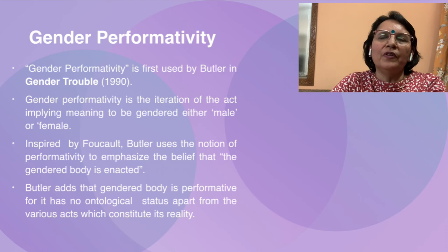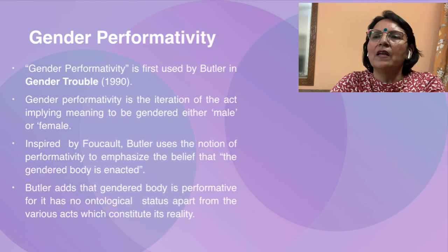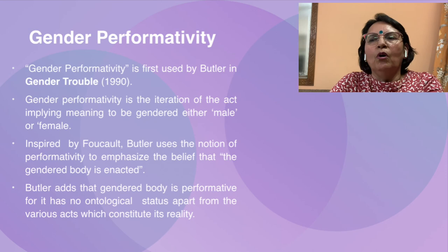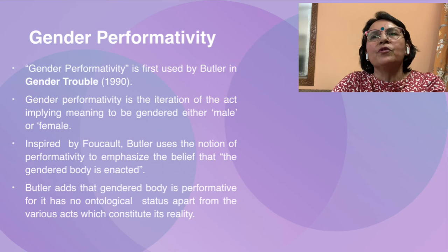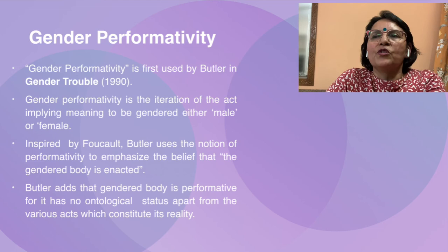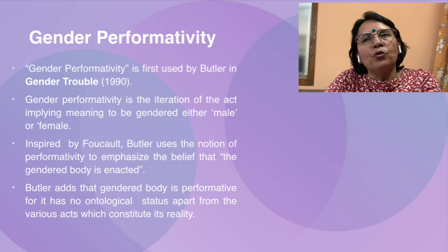Gender performativity was first used by Butler in Gender Trouble (1990). It is the iteration — the repetition of the act — implying meaning to be gendered either male or female. Butler adds that the gendered body is performative because it has no ontological status apart from the various acts which constitute its reality. She says there is no objective or natural sex, but it is performativity which constructs your gender — gender is neither essential nor biologically determined but created by its own performance, hence it is performative.